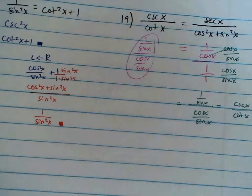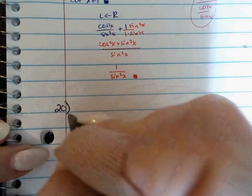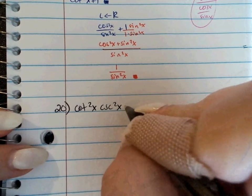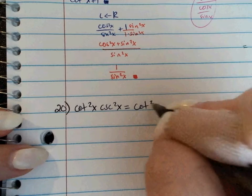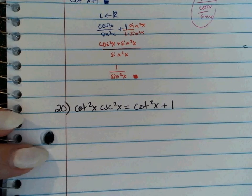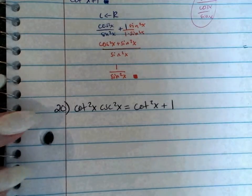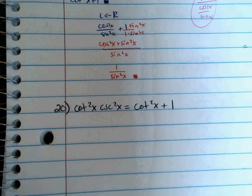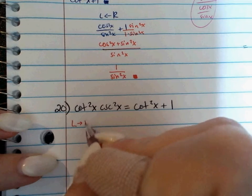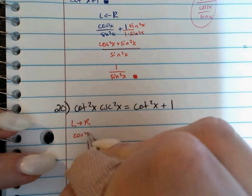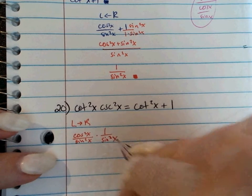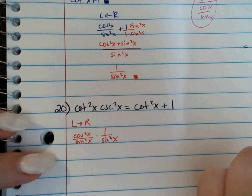Number 20 says cotangent squared times cosecant squared equals cotangent squared plus 1. I can see it going from a lot of different directions on this one. I'll go ahead and do left to right first. Cotangent squared is cosine squared over sine squared, and cosecant squared is 1 over sine squared, so that's the same thing as cosine squared over sine to the fourth — and I don't like that.